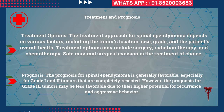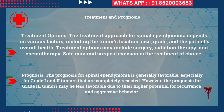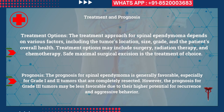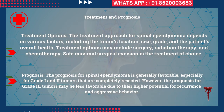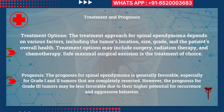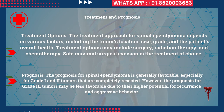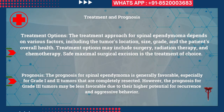What are the treatment options? The treatment approach depends on various factors including the tumor's location, size, grade, and the patient's overall health. Treatment may include surgery, radiation therapy, and chemotherapy, but safe maximal surgical excision is the treatment of choice, followed by radiotherapy for any residual tumor. The prognosis is generally favorable for grade 1 and grade 2 tumors that have been completely resected, while grade 3 tumors may have a less favorable prognosis due to higher potential for recurrence and aggressive behavior.